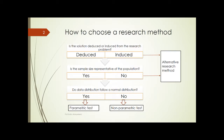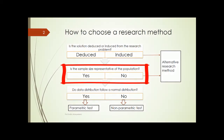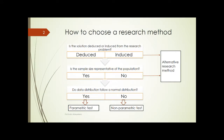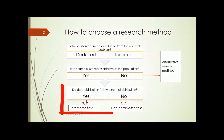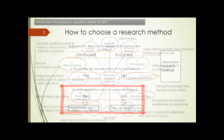The second question we ask is, is the sample size representative of the population? If the answer is no, then we will resort to alternative research methods. If the answer is yes, we progress to the third question and ask, do data distributions follow a normal distribution? If it is going to follow a normally distributed pattern, then we use parametric tests related to the scientific approach. If it is not, then we use the less sensitive types of tests called the non-parametric tests of the scientific approach.